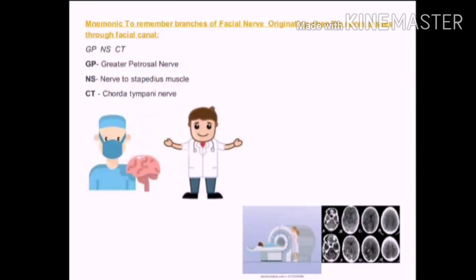So here GP stands for greater petrosal nerve. NS stands for nerve to stapedius muscle, which is a muscle in the middle ear cavity. CT stands for the chorda tympani nerve, which carries the taste sensation from the anterior two-thirds of the tongue except the circumvallate papillae.